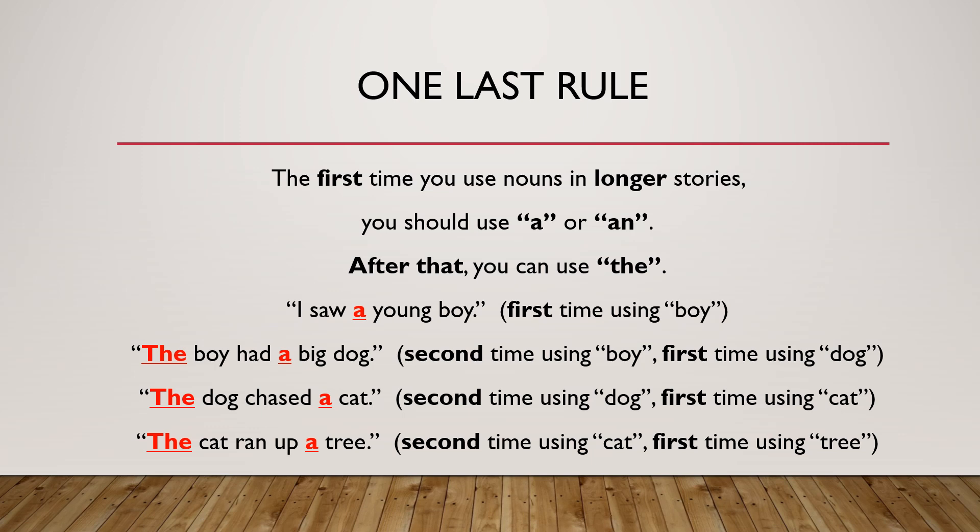These sentences have no specific information about the boy, the dog, the cat, or the tree. If there is specific information — like 'the young boy that lives next to me' — we should use the because the word boy is more specific. In this example, boy is general. If you like, please watch the video again and practice using a, an, and the when you speak. Thank you for watching.